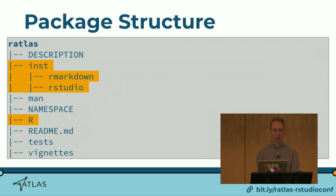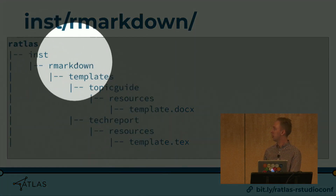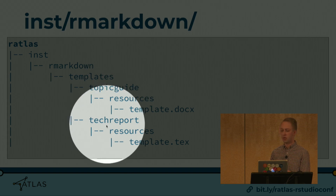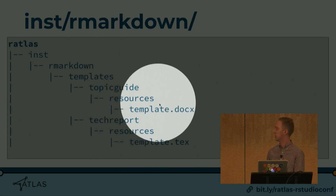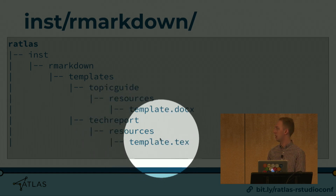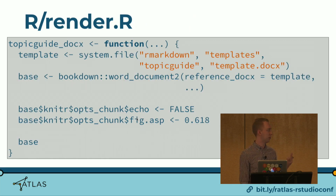When creating this package, several directories are important. Two live in the `inst` directory: the `rmarkdown` and `rstudio` folders, plus the `R` directory. The `rmarkdown` directory is where your templates live — for ratlas we have two report types: topic guides and tech reports. Topic guides go out as Word documents, so we have a template.docx there; tech reports render as PDFs so we have a LaTeX template. The key is structuring folders in a way that R and the wrapper functions can find them.